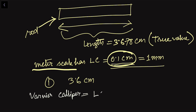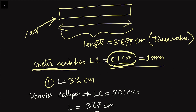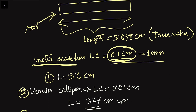Using a vernier caliper with a least count of 0.01 centimeters, we can measure the same rod and get 3.67 centimeters. This is more precise than the meter scale, but there is still an error because the true value is 3.678 centimeters — the third decimal place is still missing.